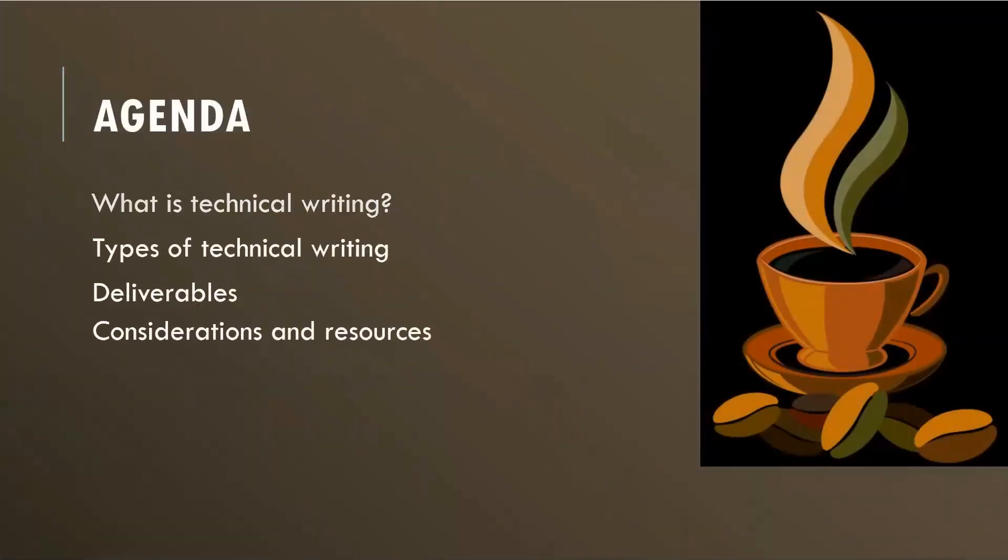We will start off with what is technical writing, then go on with the types of technical writing, the kind of deliverables a technical writer does, what are the considerations a technical writer must consider and the kind of resources, the types of resources which are tools and applications and skills a technical writer must possess to get his work done. And at the end, I will show you what are your next steps once you complete this video.